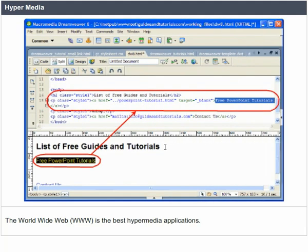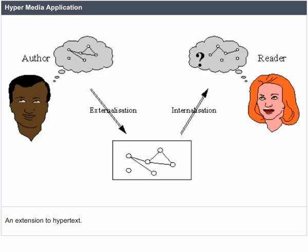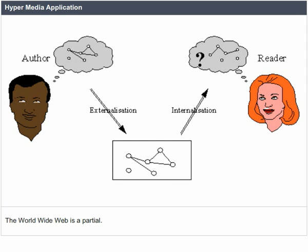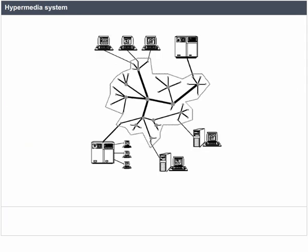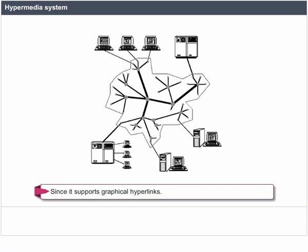The World Wide Web is the best hypermedia application — an extension to hypertext that supports links, graphics, sound and video elements. The World Wide Web is a partial hypermedia system. Since it supports graphical hyperlinks, new hypermedia systems allow objects in computer videos to hyperlink.